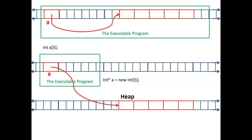Now your executable is very small, and the array is in heap. Heap is the memory in which all programs are running and the operating system has control over it. By saying 'new', you're asking the operating system to give you the memory, not the compiler. With a regular array, you ask the compiler - it inserts that memory inside your executable, and when the executable comes to memory, your array comes with it. When your executable goes out, your array goes with it.